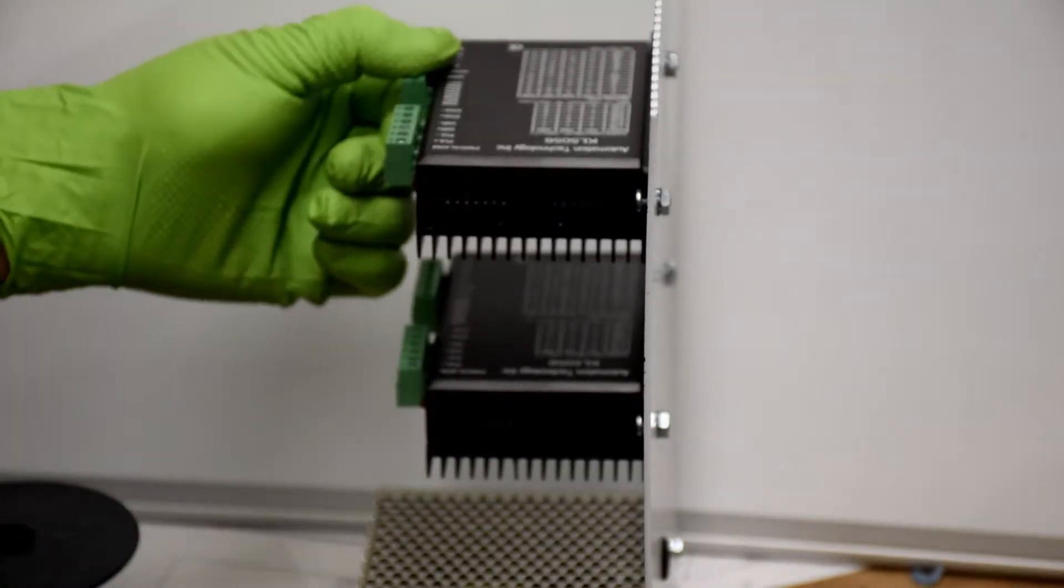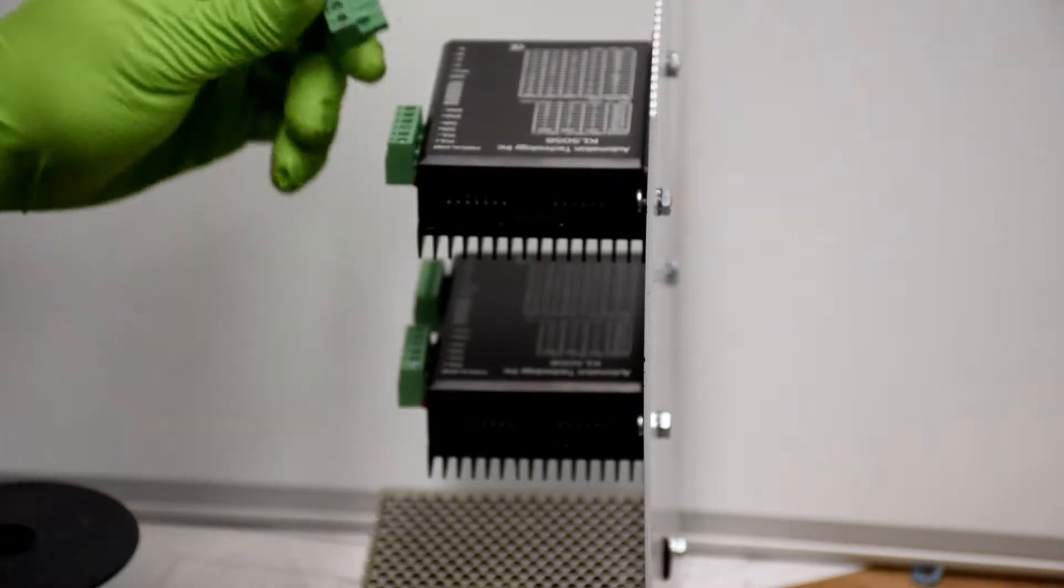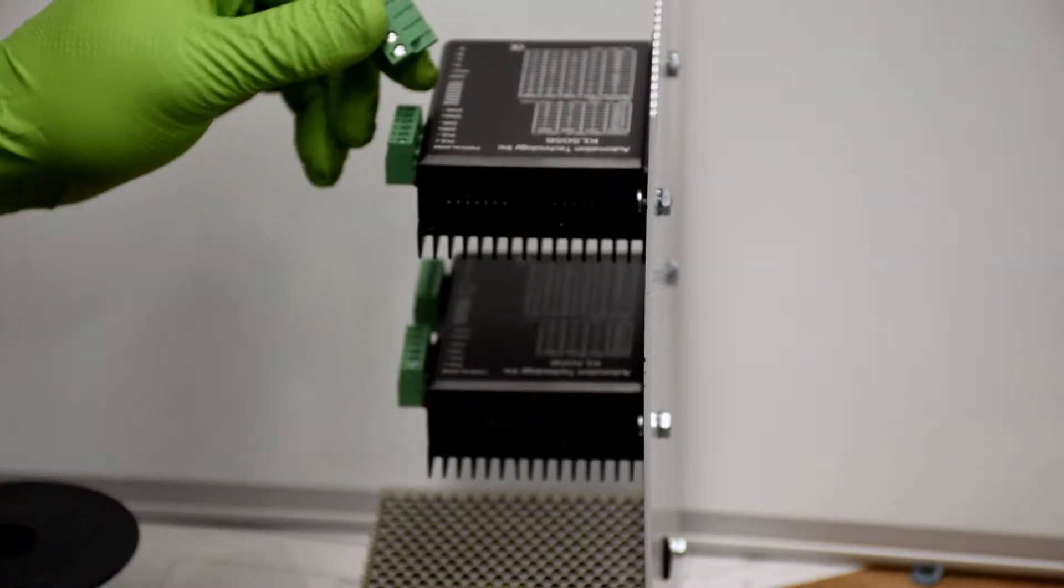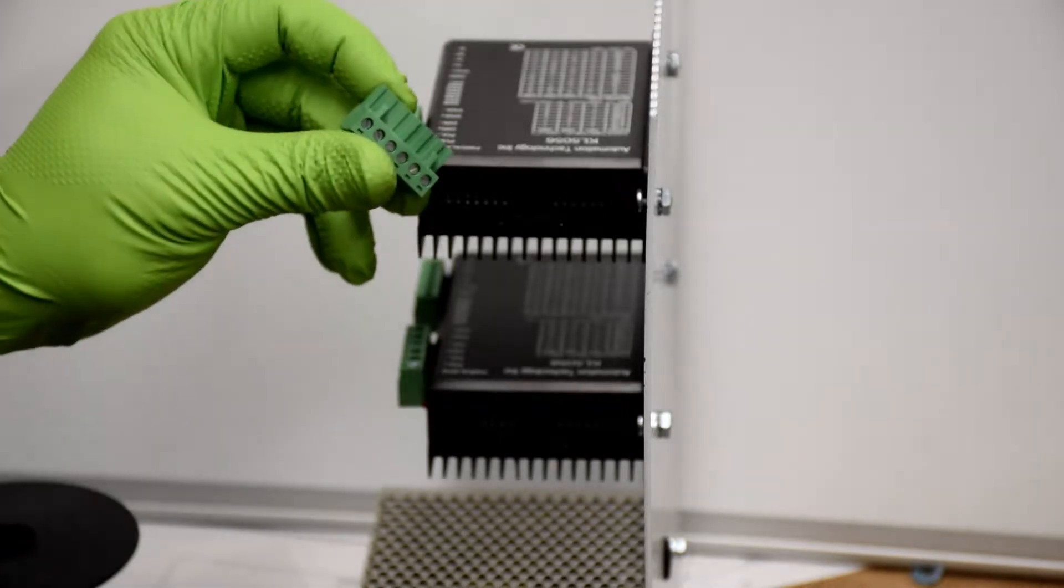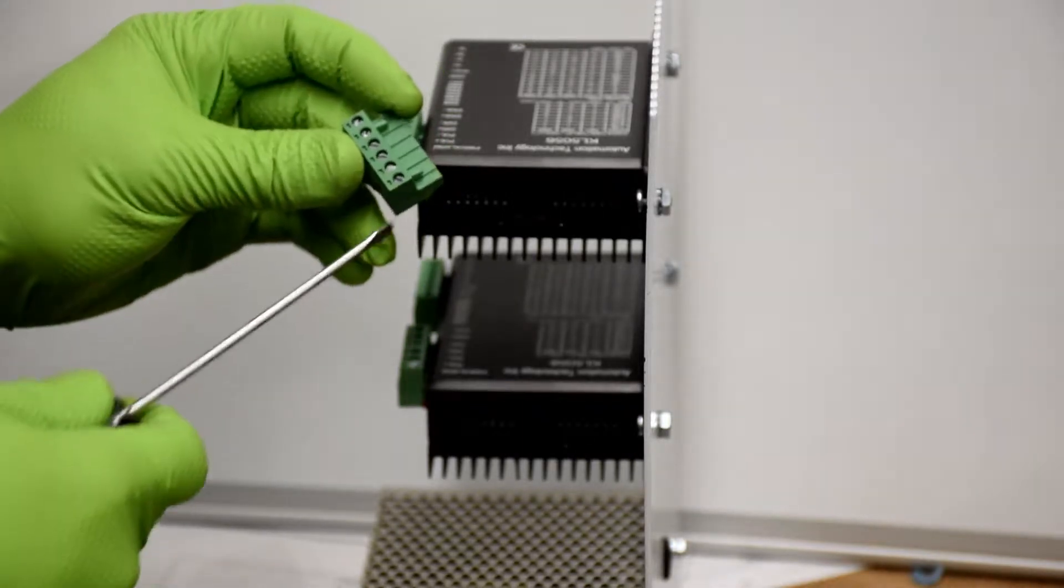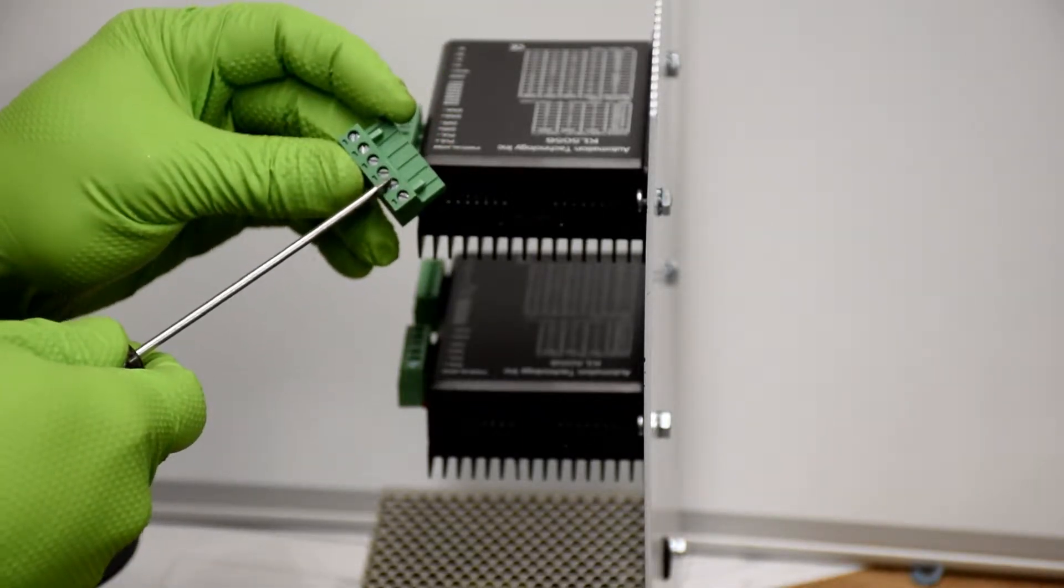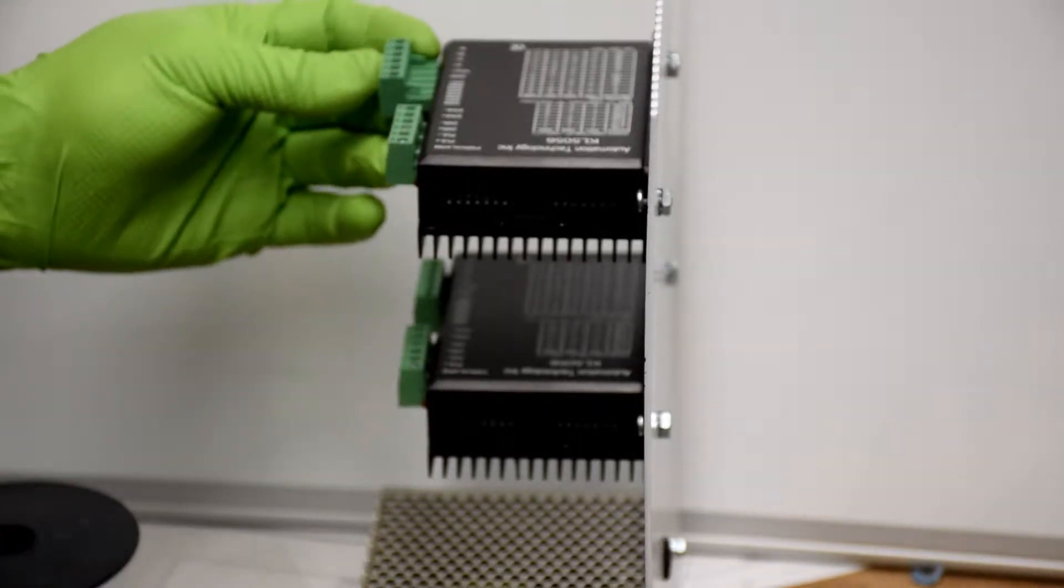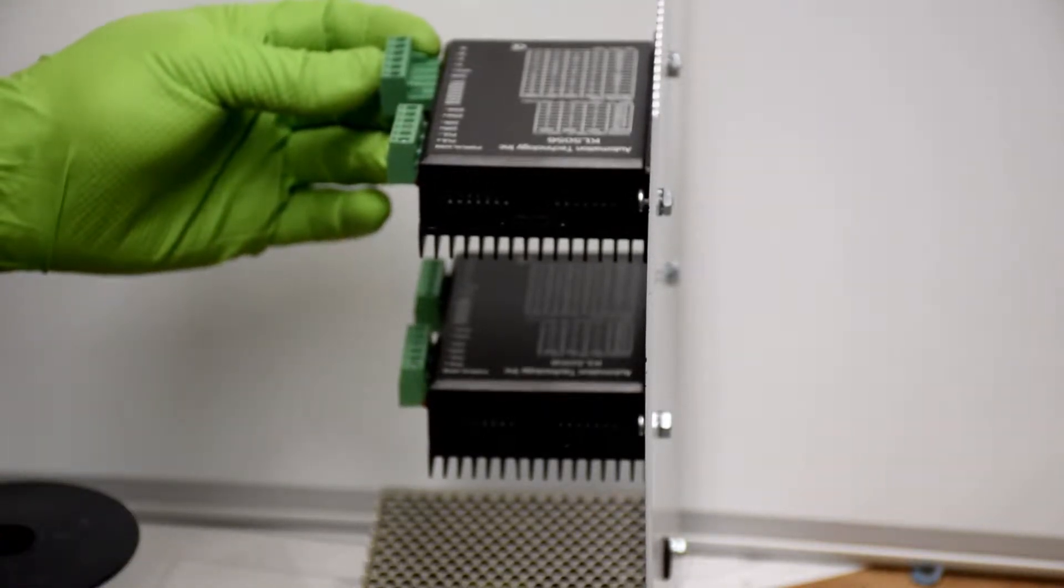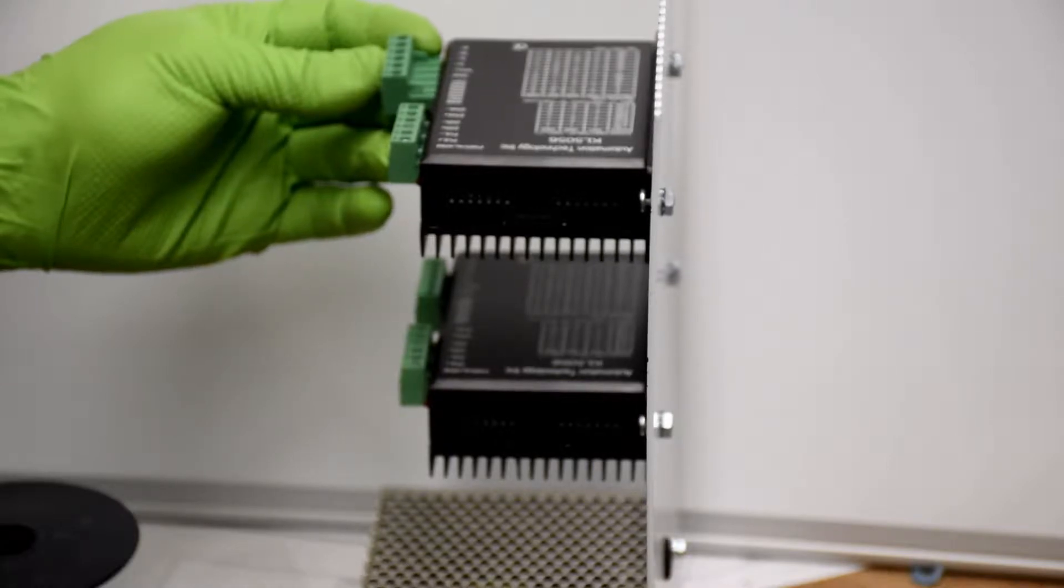We're going to connect the wires into the terminal block labeled GND and V+. Black wire goes there, red wire goes there. It's really handy to have these terminal blocks that pull out. It makes wiring a lot easier.